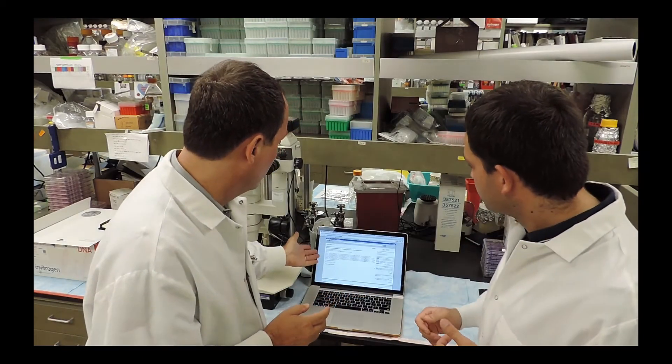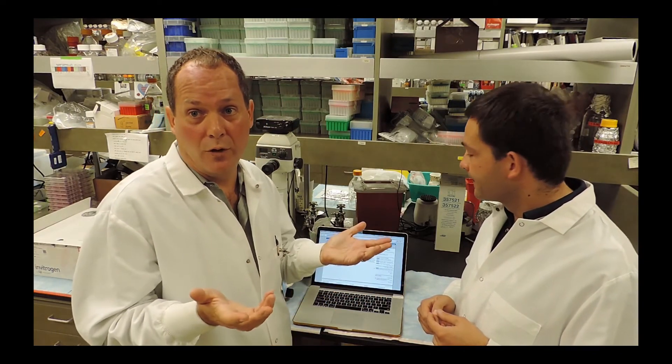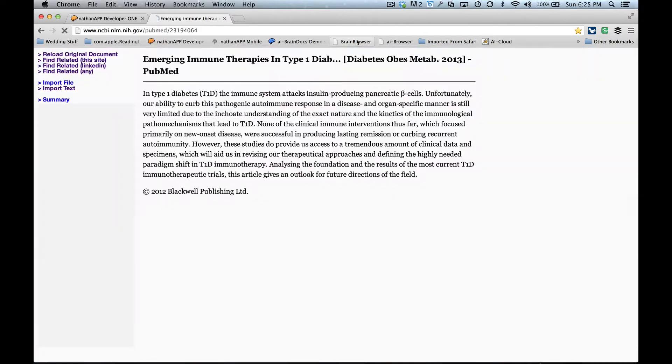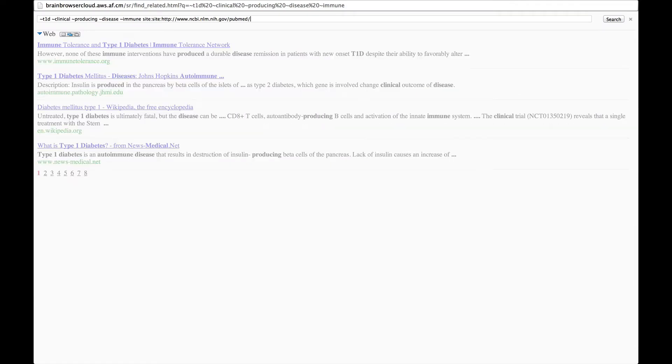Okay, so we've developed a tool called Brain Browser, which is part of Analyst Toolbox, brought to you by AI1, and let's see whether we can do something. We've got one of your review articles here, Emerging Immune Therapies in Type 1 Diabetes, and so what I'm going to do is I'm going to see whether Brain Browser finds related articles. This is a review article that took me eight months to write.